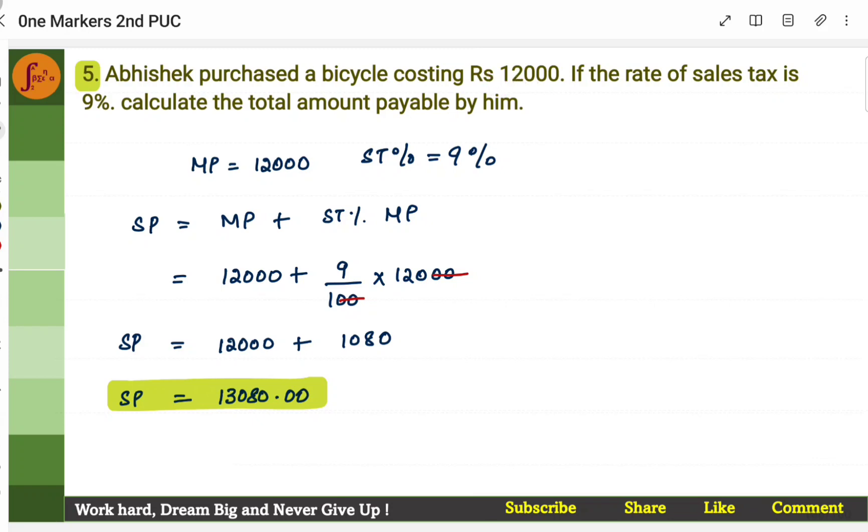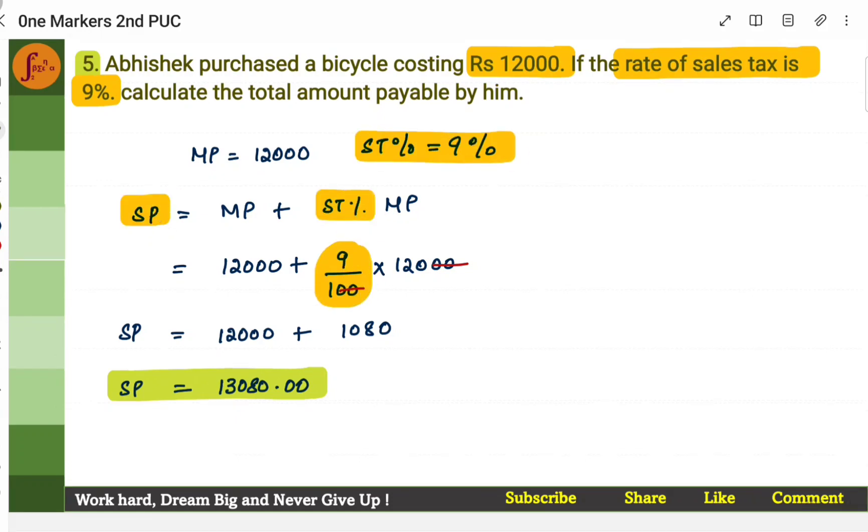Let's go to the next problem. Abhishek purchased a bicycle costing Rs. 12,000. If the rate of sales tax is 9%, that means sales tax percent is 9%. Calculate the total amount payable by him. That means he has to pay sales tax and he has to pay the price of the bicycle. Both he has to pay and that's when it becomes the total selling price. Abhishek purchased a bicycle costing Rs. 12,000. So this is the marked price. Rs. 12,000 is marked price. The rate of sales tax is 9%. So ST percent is 9%. So now you substitute marked price, sales tax, again marked price here and you will get the selling price. So selling price is Rs. 13,080. Selling price always has the marked price plus the sales tax percent.